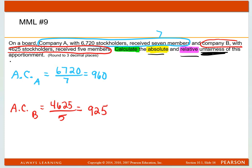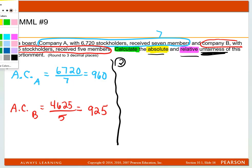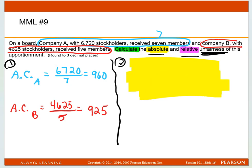So this is step one: figuring out the two average constituencies. And then step two, I'm going to calculate the absolute unfairness. The absolute unfairness is simply found by taking the larger average constituency minus the smaller one.